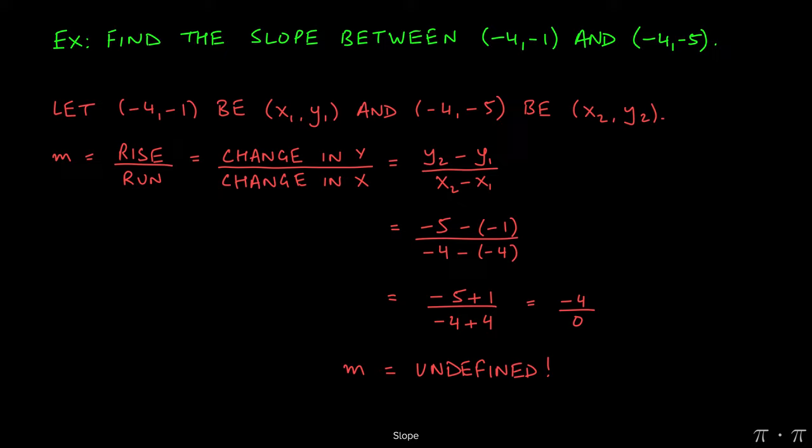Now, you could have also thought about this problem geometrically. The hint here is that the two x-coordinates for the points are the same. That means that the line must be vertical. Hopefully, you remember the little factoid that I discussed in an earlier video: the slope of all vertical lines is undefined.